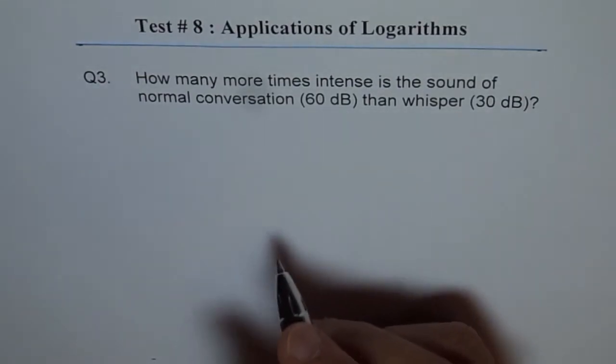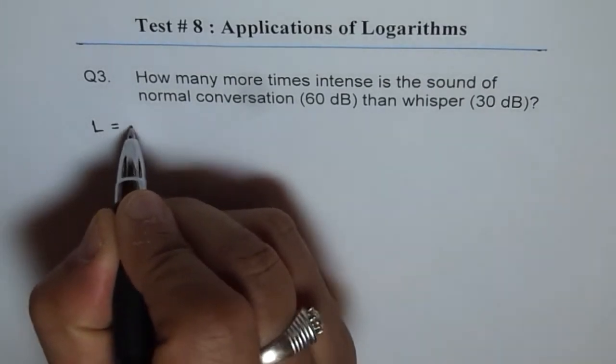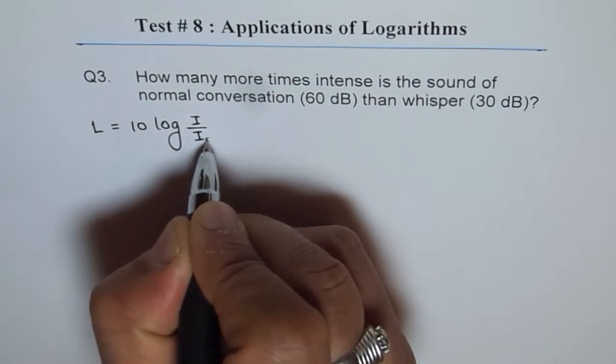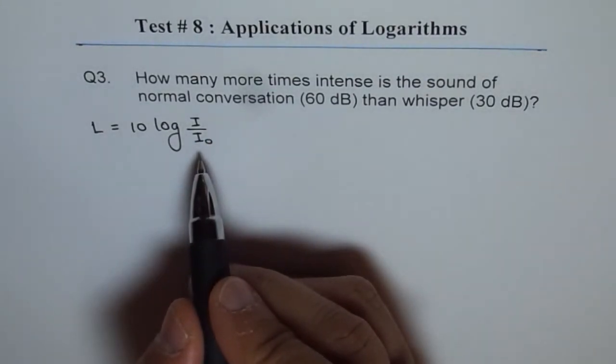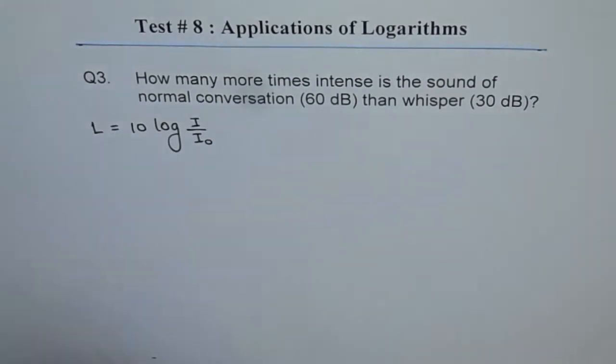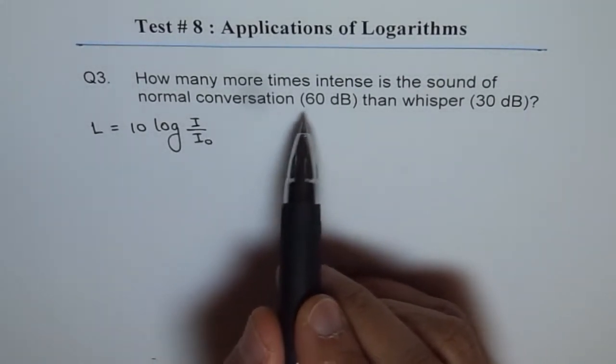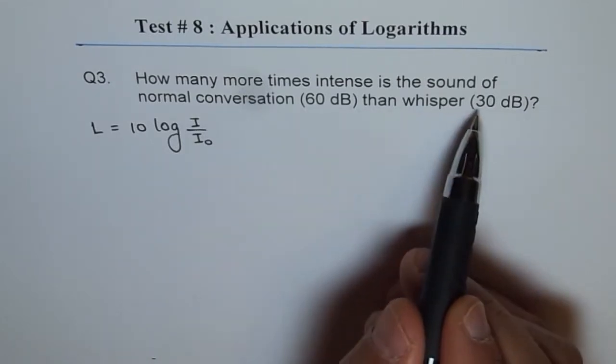So here we will use the formula for loudness of sound, which is L equals 10 log I over I0. Here, I0 is the minimum sound we can hear. Now, we are given two levels of sound: 60 decibels for normal conversation and 30 for whisper.